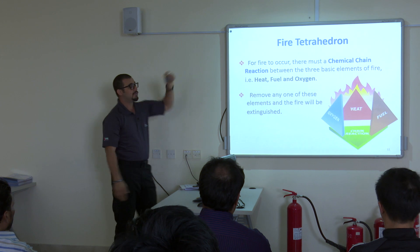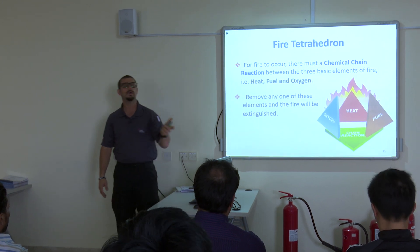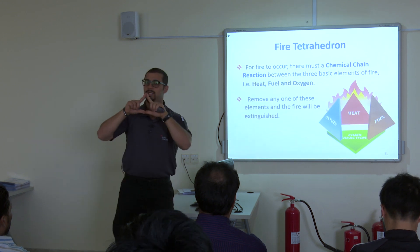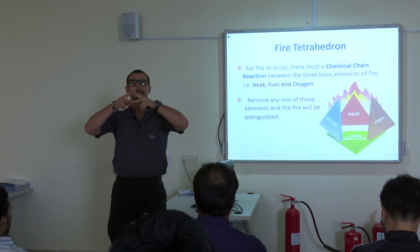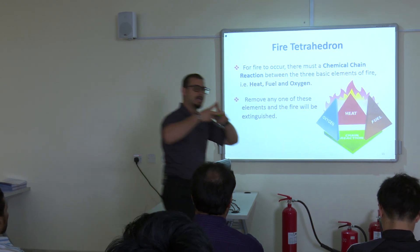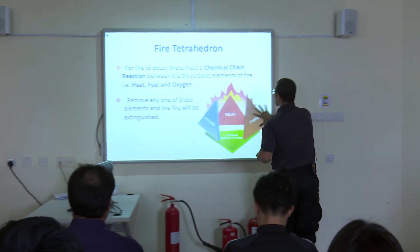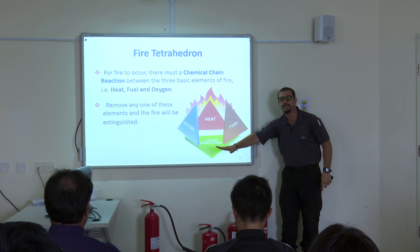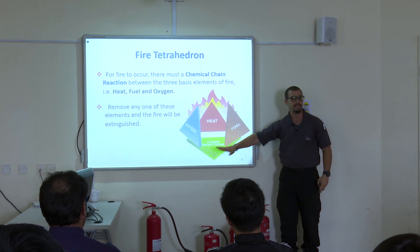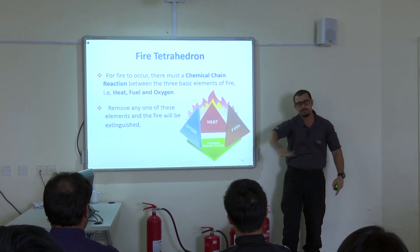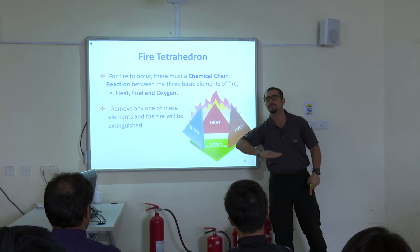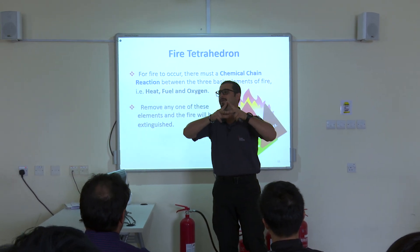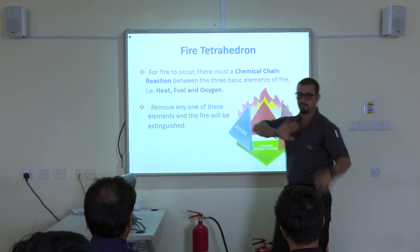Now there is a new addition to the fire triangle — we call it the fire tetrahedron. Before it was a triangle; now it is like a 3D pyramid. You still have fuel, heat, and oxygen, but the chain reaction is placed at the base, because it is very important to combine the three elements together.